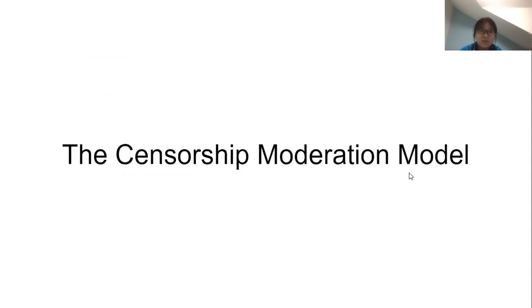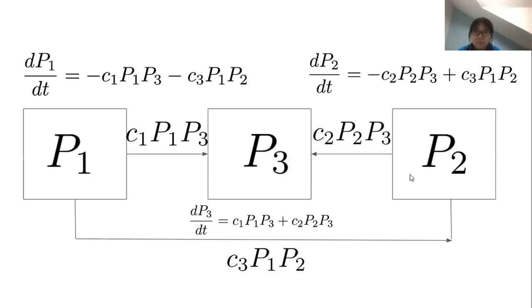The first model we're going to talk about is the censorship moderation model. This model consists of three groups: P1 and P2 having opposite initial points of view, and P3 is the opinionless group. We suspect that the inappropriate information is more related to the point of view of P1. When information closer to P1 is censored, the direct result is that people can only see the point of view closer to P2.